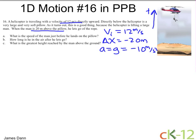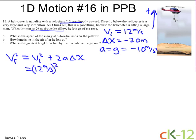To solve the problem, we can use the equation: the final velocity squared equals the initial velocity squared plus two times the acceleration times the displacement. Plugging in our values, we get 12 meters per second squared plus 2 times negative 10 meters per second squared times negative 20 meters.